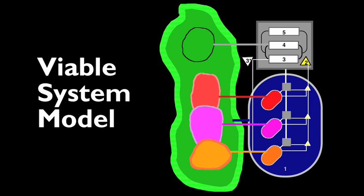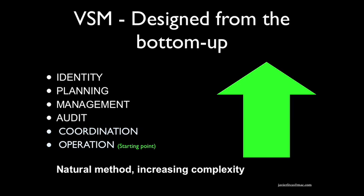It is called the viable system model, and it works for any living thing with the capacity to have an independent existence. It works starting at the operation level. Several operations create a process or another operation. Then these operations need coordination, auditing, direction, planning, and an identity of their own.